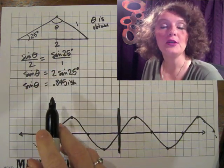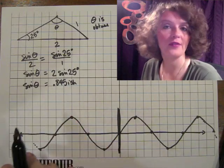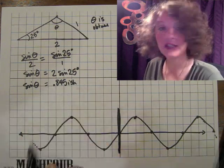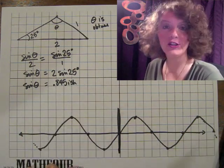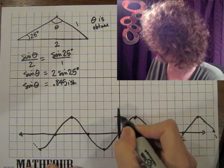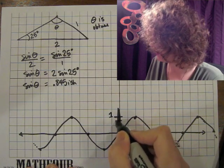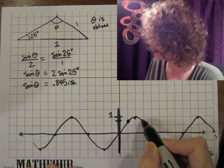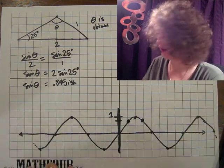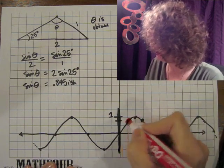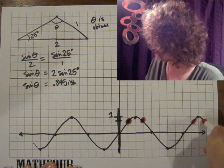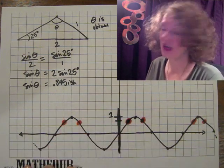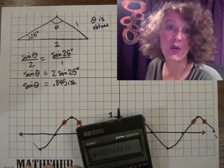So 0.845-ish is the sine of theta. Now, what I'm going to do is take the arc sine of 0.845-ish to figure out what theta actually is. Here's the deal though — if we look at the sine wave, here is 1, so here is 0.845-ish, which means I could get this answer, or this answer, or this answer, or this answer, or this answer, and the calculator doesn't know which one to pick.